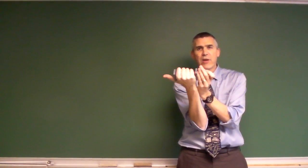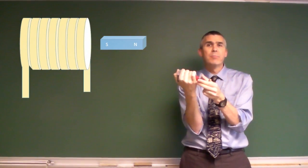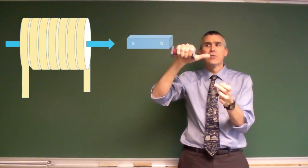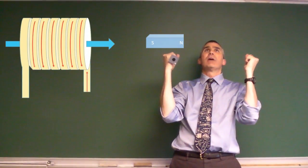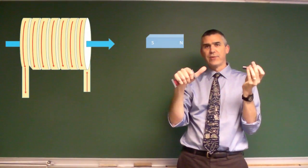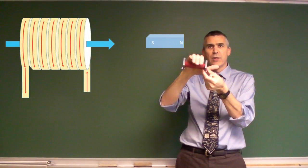When I pull that south end of the magnet out, then it's going to be the opposite direction. It's going to expose a north end towards me so that it will try to thwart my evil plan of pulling the south end away. Thus, my magnetic field will be this direction and my current will be this.